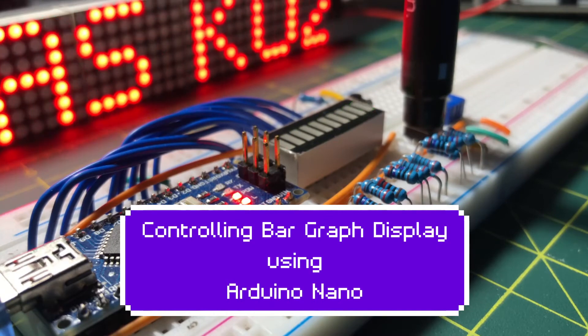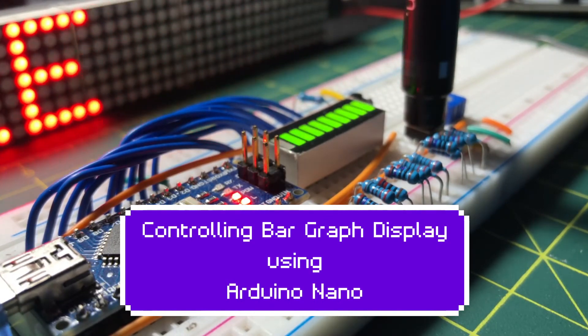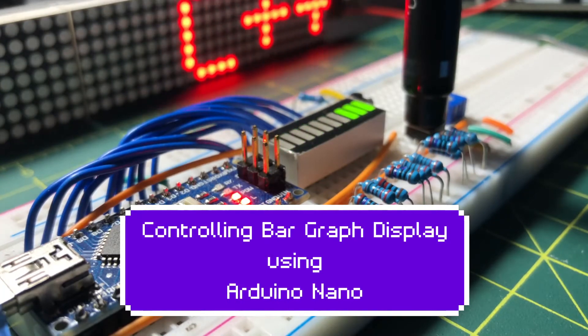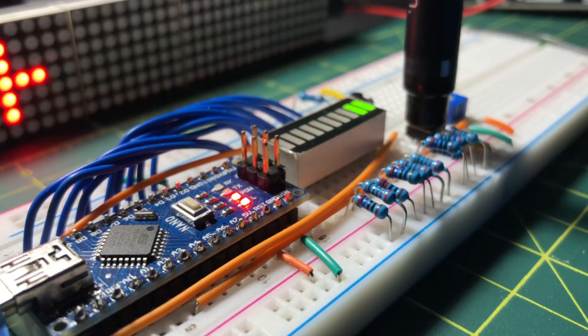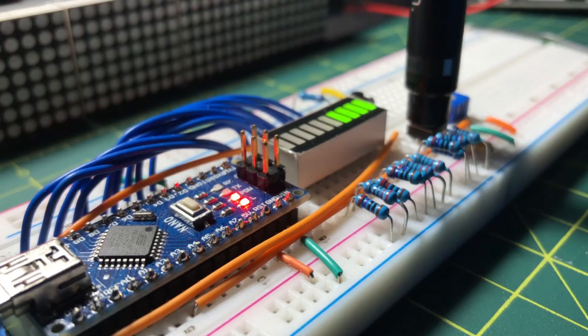In this video, a 10-bit bar graph screen is interfaced to an Arduino Nano displaying two patterns controlled by the user. The C++ code stored in the Arduino will also be explained in detail.